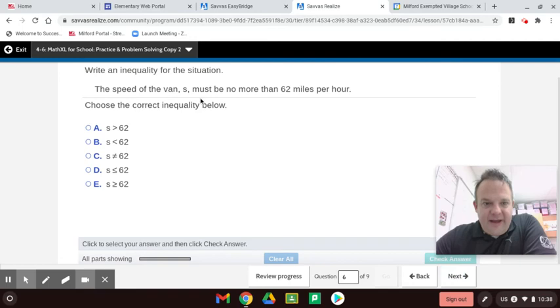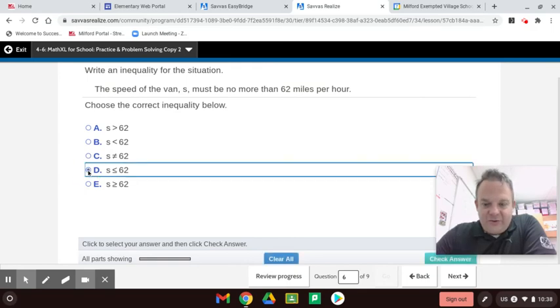The speed of the van, S, must be no more than 62 miles per hour. So could it be 62? Yes. Could it be more than? No. Could it be less? Yes. So less than or equal to 62. So S has to be less than or equal to 62.